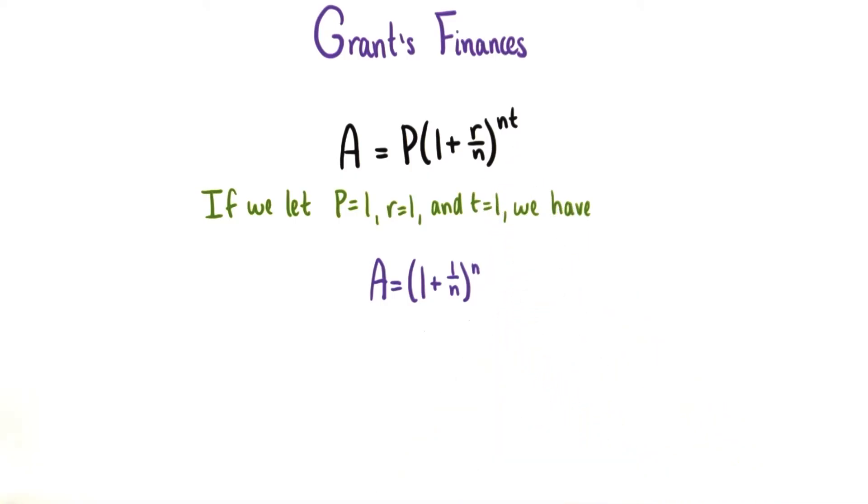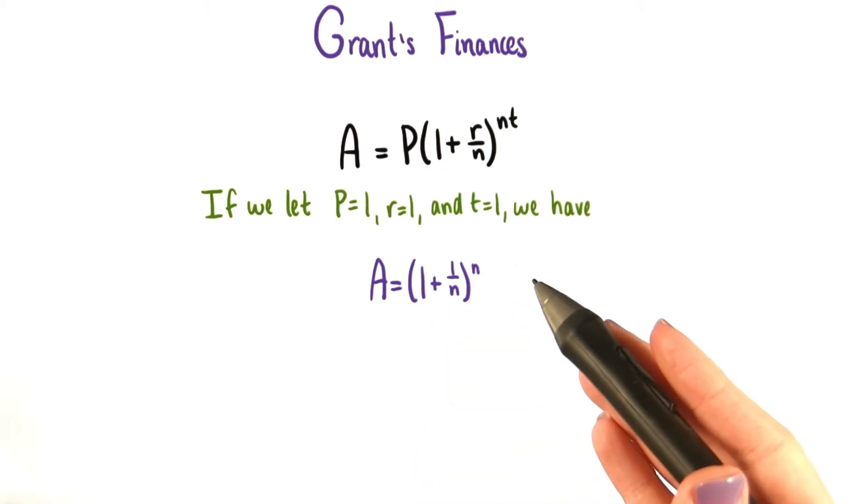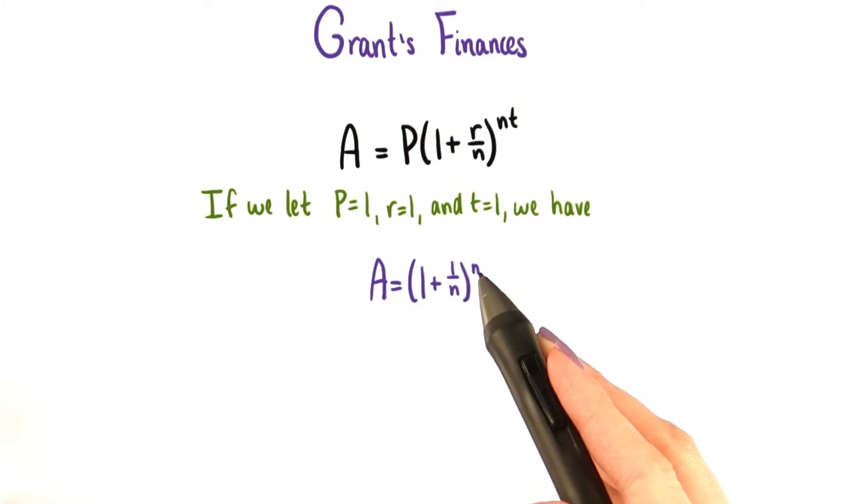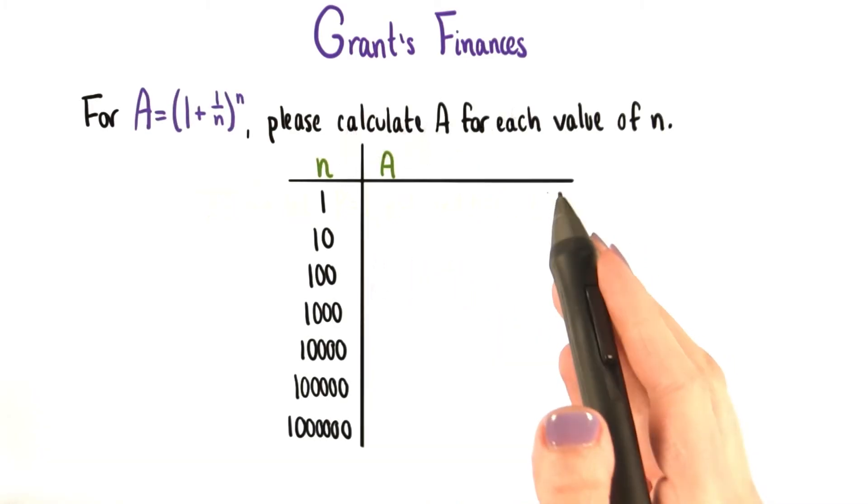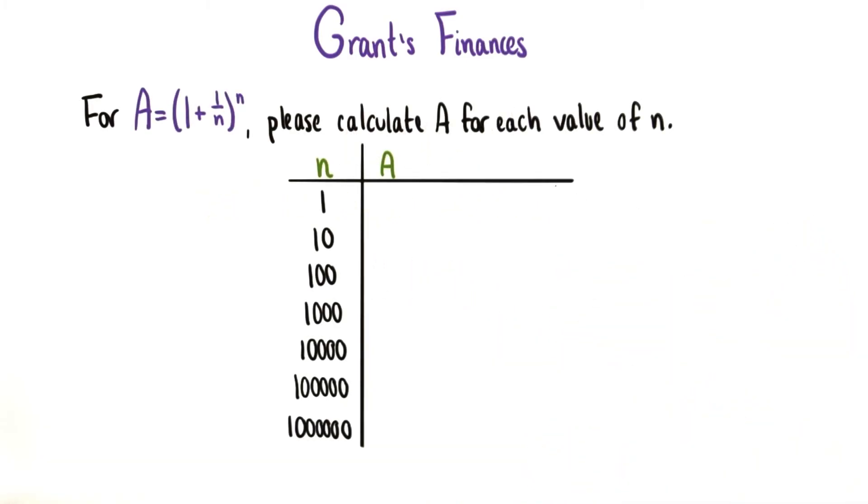If we want to use our good old formula here and keep increasing n, then we reach a particular function. Let's see what happens if we substitute in the values p equals 1, r equals 1, and t equals 1, and then increase the value of n.